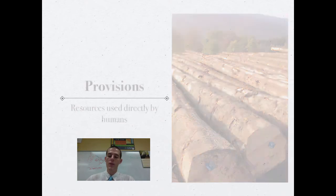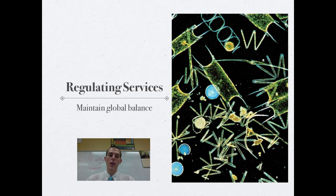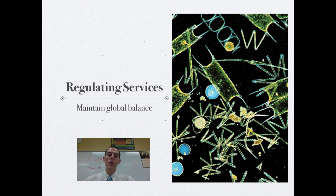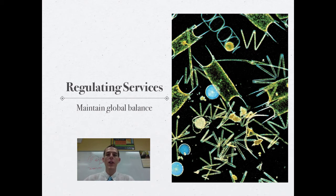The next category of ecosystem service that you should be aware of is regulating services. Regulating services are services that help maintain global balances. An example of this would be the plankton you see there — they are floating throughout the oceans and they take in carbon dioxide.